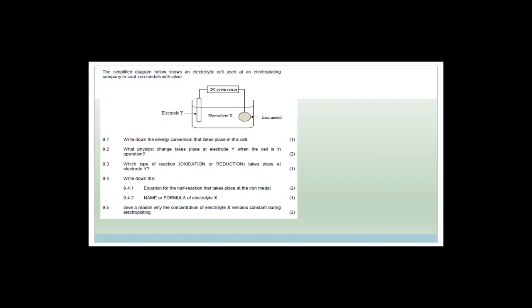Write down the energy conversion that takes place in the cell. The energy conversion is going to be from electrical to chemical. How do we know that? They tell us we've got a power supply. So if we've got a power supply, it means that we're starting with electrical energy and we are converting to chemical energy.